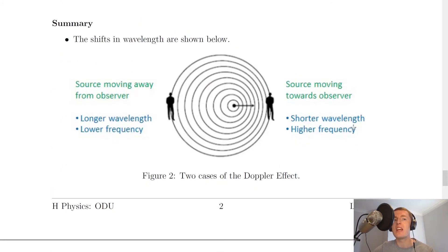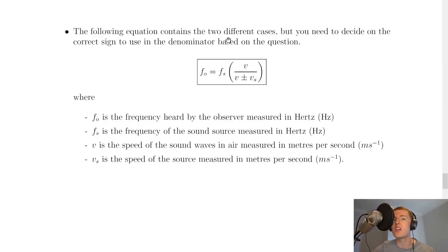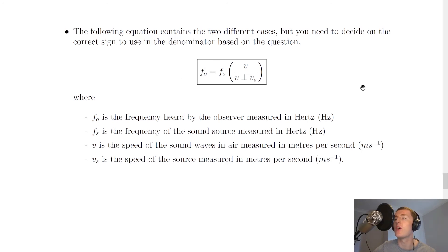As a summary: for a source moving towards the observer, the waves bunch up, giving a shorter wavelength and therefore a higher frequency. If the source is moving away from the observer, the waves spread out behind the source, giving a longer wavelength and a lower frequency. The combined equation is FO = FS × V / (V ± VS). This is the equation on the relationship sheet in the exam, and you need to decide on the correct sign — plus or minus — based on whether the source is moving towards or away from the observer.